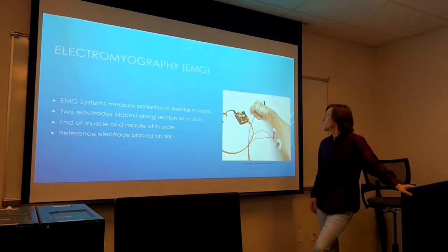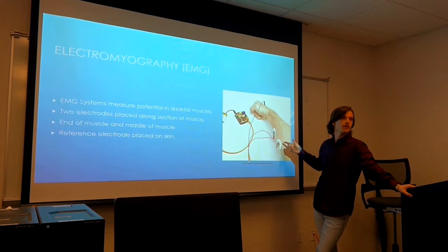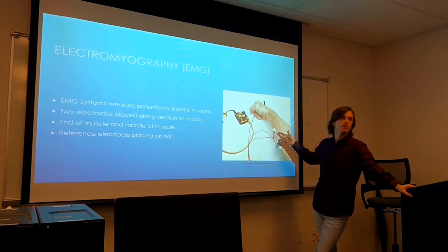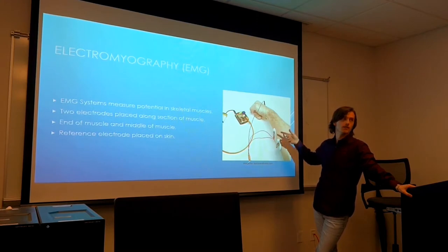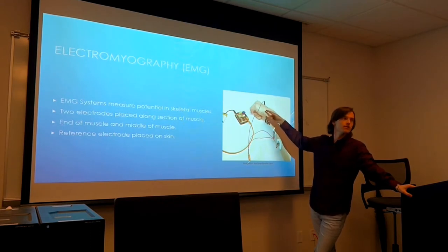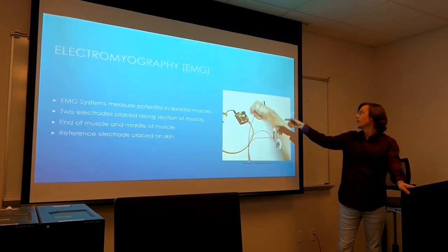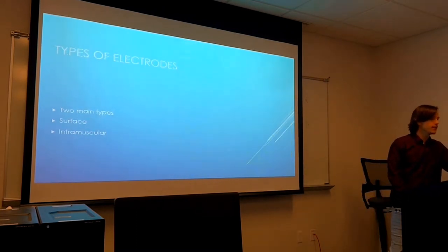The typical electromyographic hookup involves three electrodes. Two electrodes are placed along the muscle — one in the center and one at the end — measuring the potential difference between those two points as the electric signal travels through your muscle to activate it. You'll also have a ground electrode placed somewhere away from the muscle as a reference node.